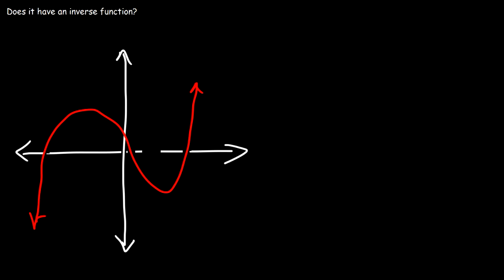So what about this one? This function does not pass the horizontal line test. It touches it at three points. And so it's not a one-to-one function, and it does not have an inverse function.